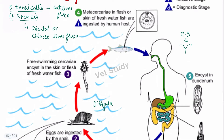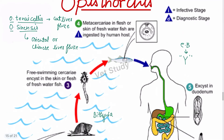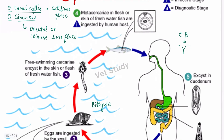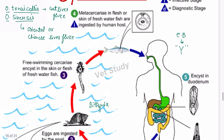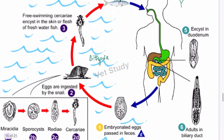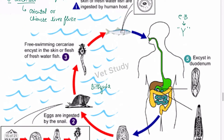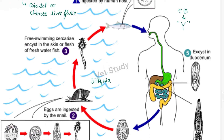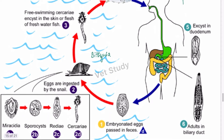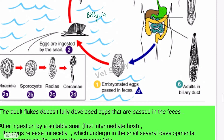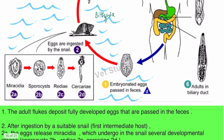The free-swimming cercaria encyst in the skin or flesh of freshwater fish, where they become metacercaria. When humans eat this infected fish, the metacercaria — which is the infective stage — enter the body. The embryonated egg is the diagnostic stage. The metacercaria excyst in the duodenum and migrate to the bile duct, where adults form and lay eggs.